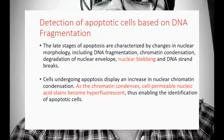Cells undergoing apoptosis display an increase in nuclear chromatin condensation. As chromatin condenses, cell-permeable nucleic acid stains become hyperfluorescent, enabling identification of apoptotic cells. As chromatin gets dense during the last stage of cell death, the nucleic acid stains become very vibrant, which is captured by SSC (side-scattered light), indicating that cells are at the last stage of apoptosis.